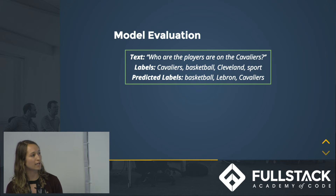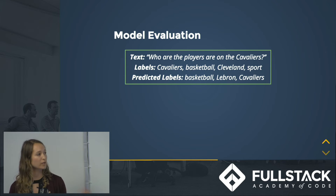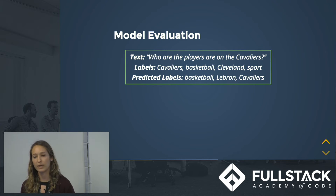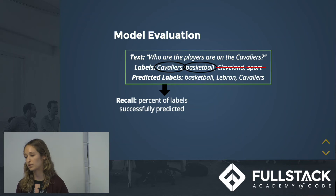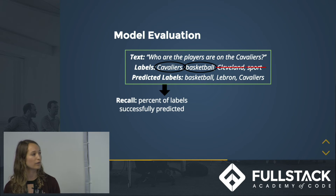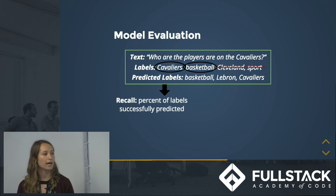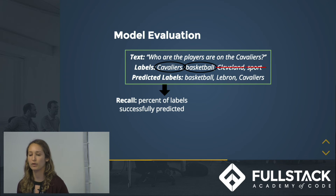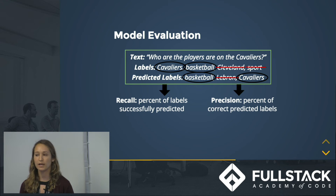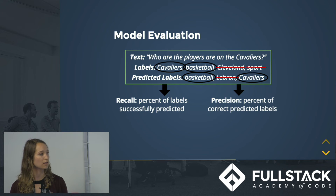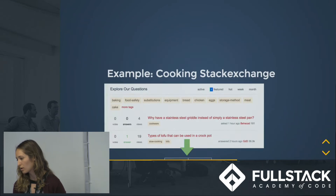FastText also allows us to evaluate the model. For example, with a text about the Cavaliers, we might have four associated actual labels and three predicted labels output by the model. We look at two measures: recall — out of all actual labels, what percent did we recall? Here we recalled two of four, so recall is 50%. And precision — out of all predicted labels, what percent were correct? Here two of three predicted labels were correct, so precision is 67%.